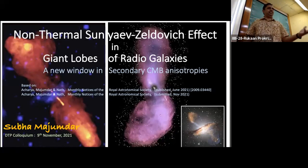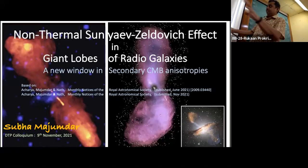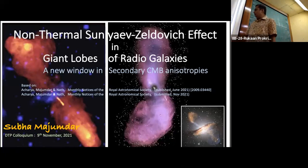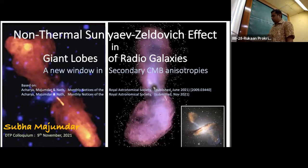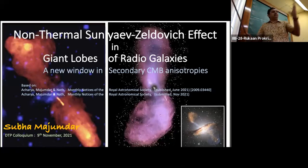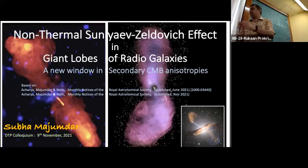Over here is a picture of our galaxy, and the same radio jets, which are perpendicular to the disk of the galaxy. This is the Centaurus A elliptical galaxy.